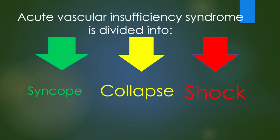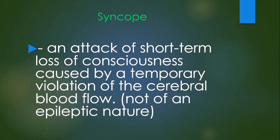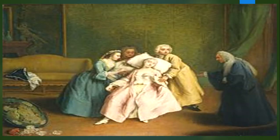Acute vascular insufficiency syndrome is divided into three different syndromes: syncope, collapse, and shock. Syncope, or faint — you hear about it a lot — is an attack of short-term loss of consciousness caused by a temporary violation of cerebral blood flow, not of epileptic nature.